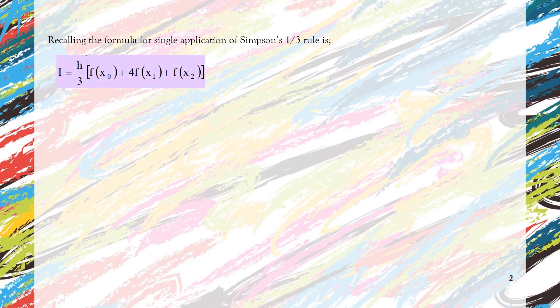This is the formula where you have H over 3 at the front that reminds you that you are using the right formula of Simpson's one-third rule.